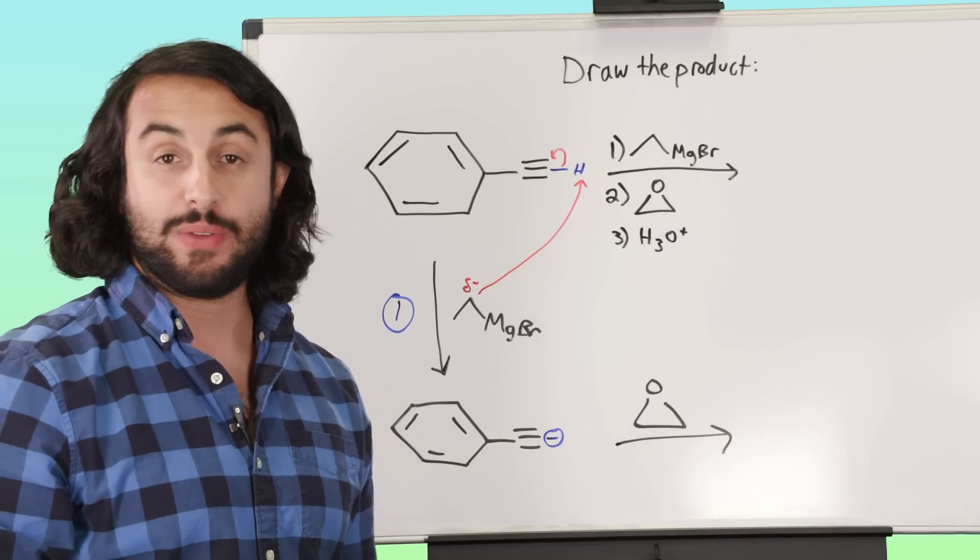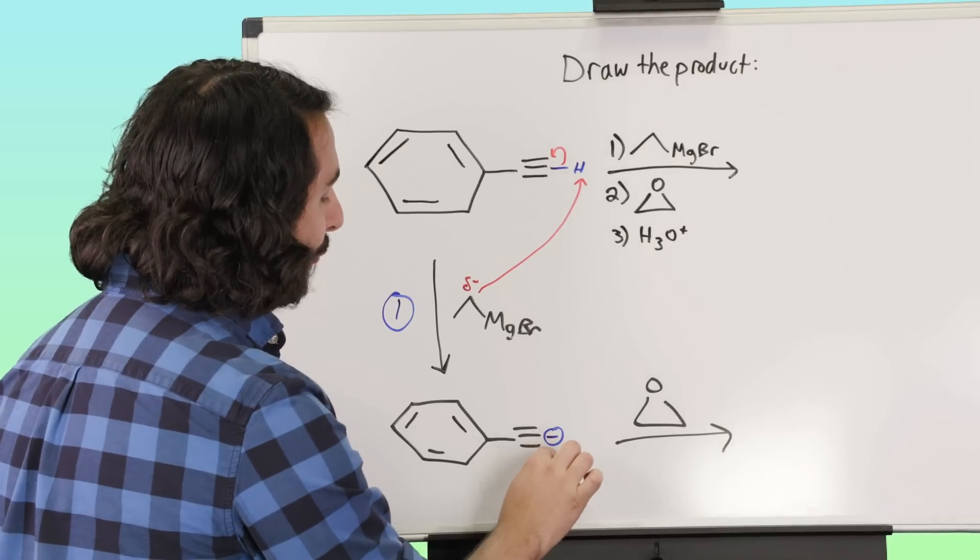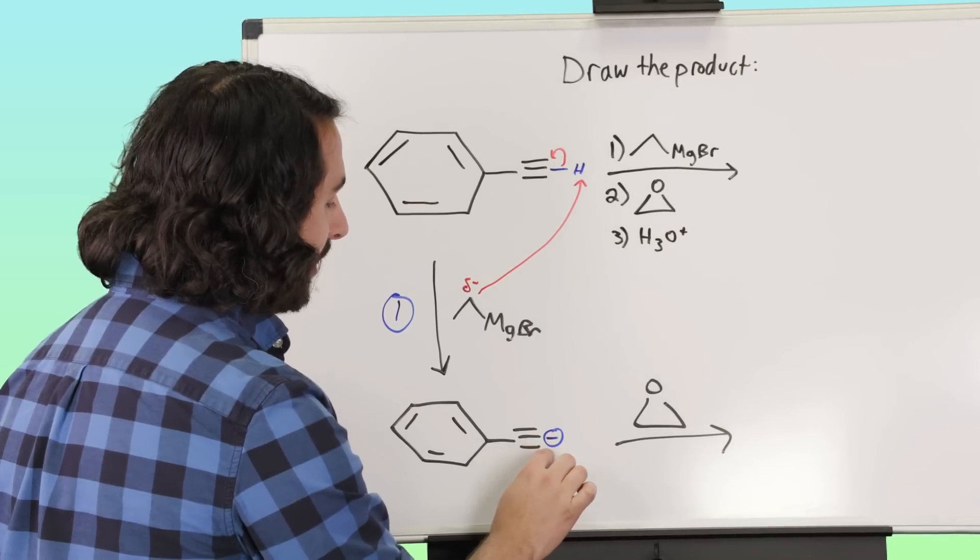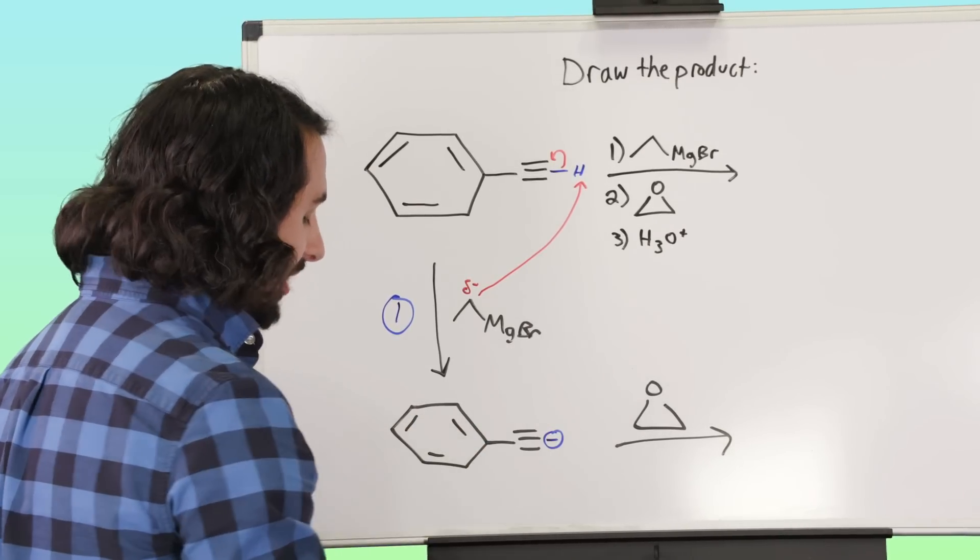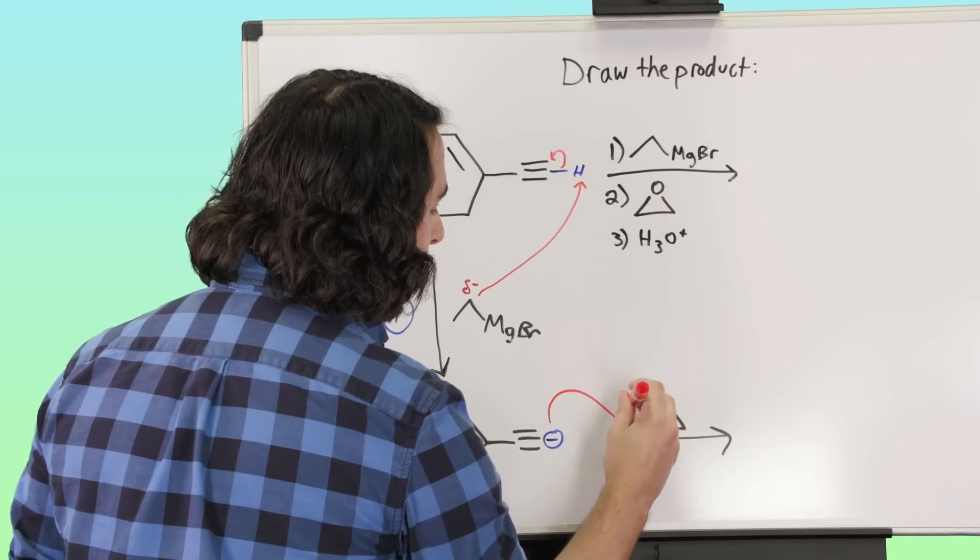The acetylide anion, as we've said, is a good nucleophile because it's sort of bullet-shaped, it's linear. So we have a formal negative charge on this carbon, and there's not a lot of steric hindrance, so this is going to be able to go ahead and attack and pop that open.